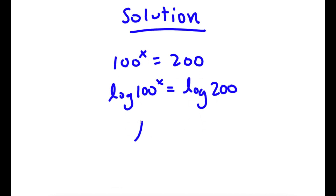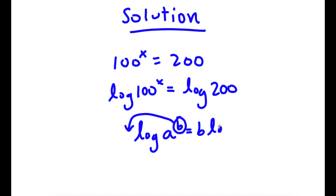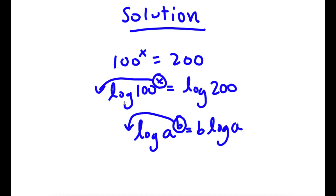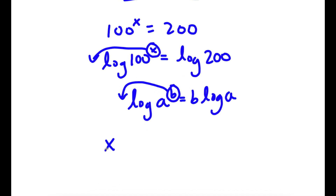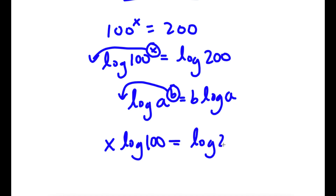Now if I have something in the form log a to the power of b, this is the same thing as b times log a — I can move the exponent to the front. So in this case, log 100 to the power of x, I can move x to the front. So now I have x times log 100 is equal to log 200.